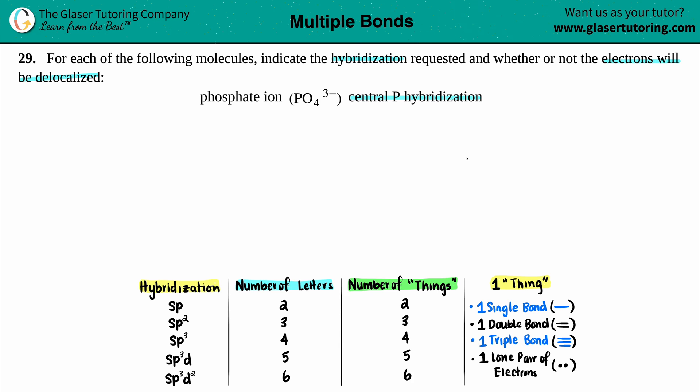Now in order to find a hybridization, the easiest way to go about this is to draw the Lewis structure. So even though it's an extra step, just seeing the visual will help you out to find the hybridization. Now they do give us a hint here that the central phosphorus is the central atom. So in PO4 3 minus, I have one phosphorus that now has four oxygens surrounding it.